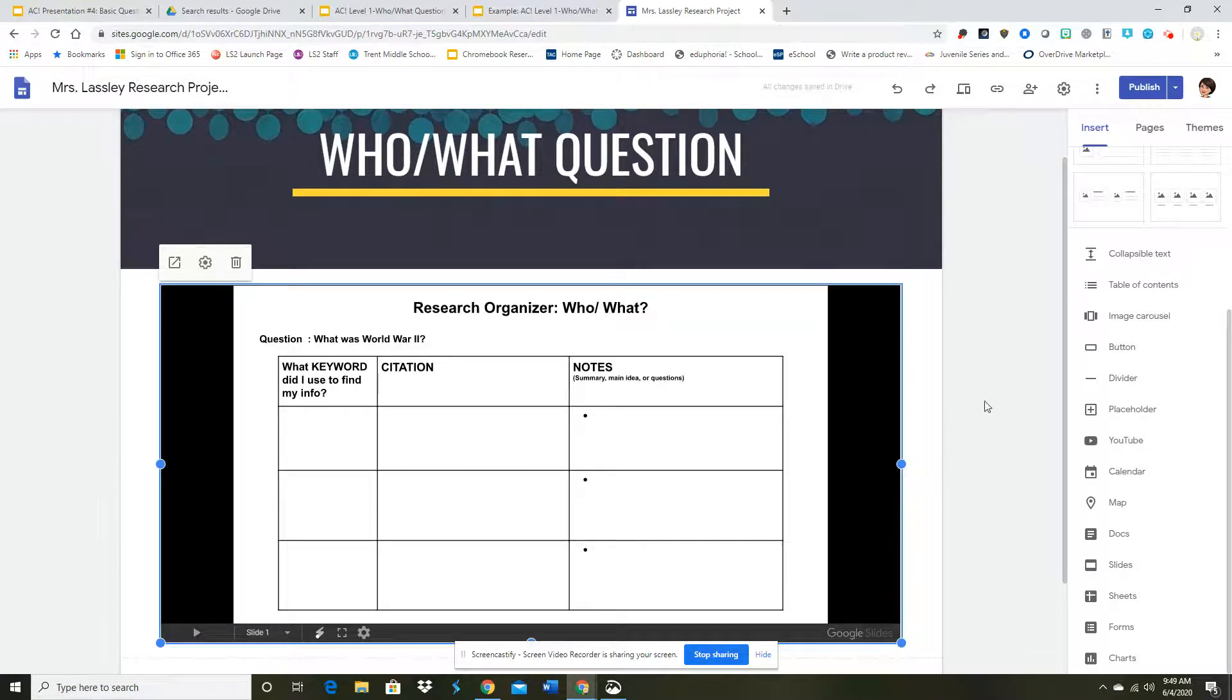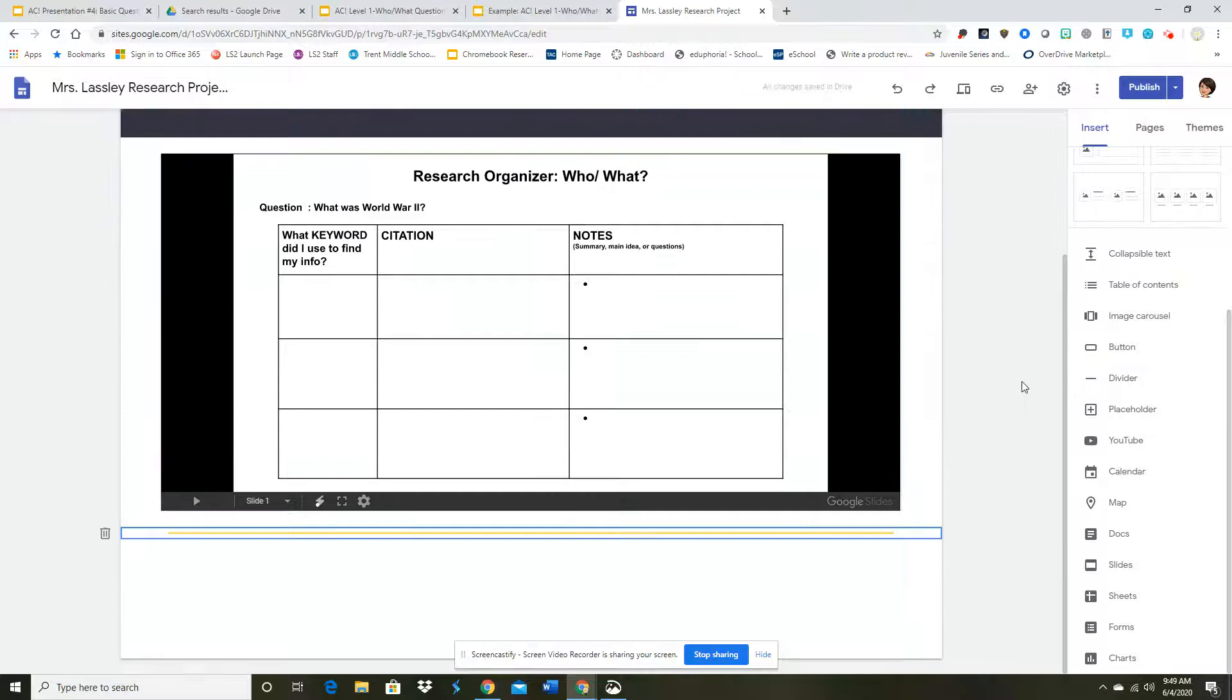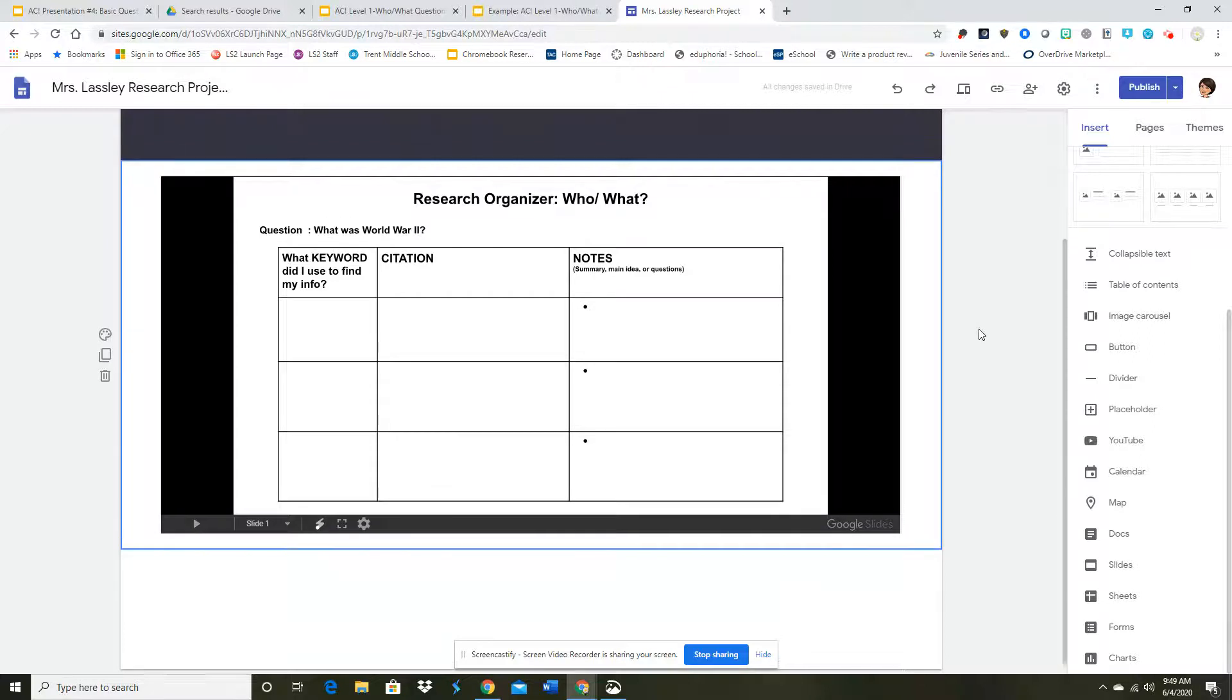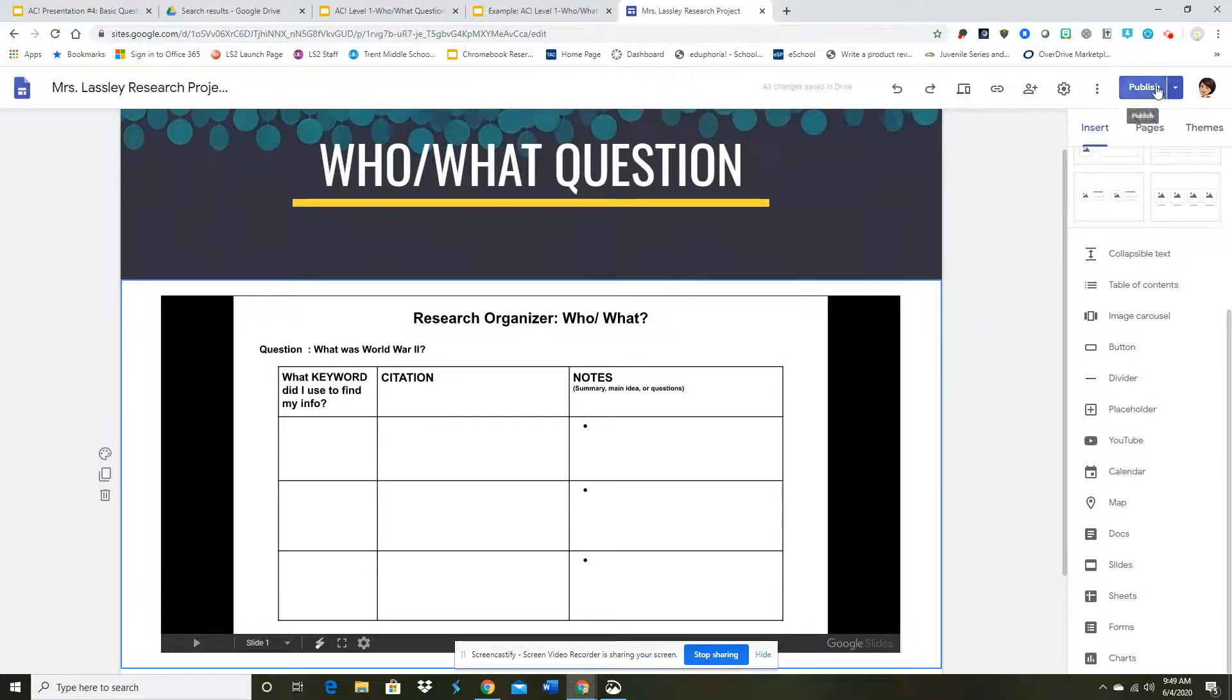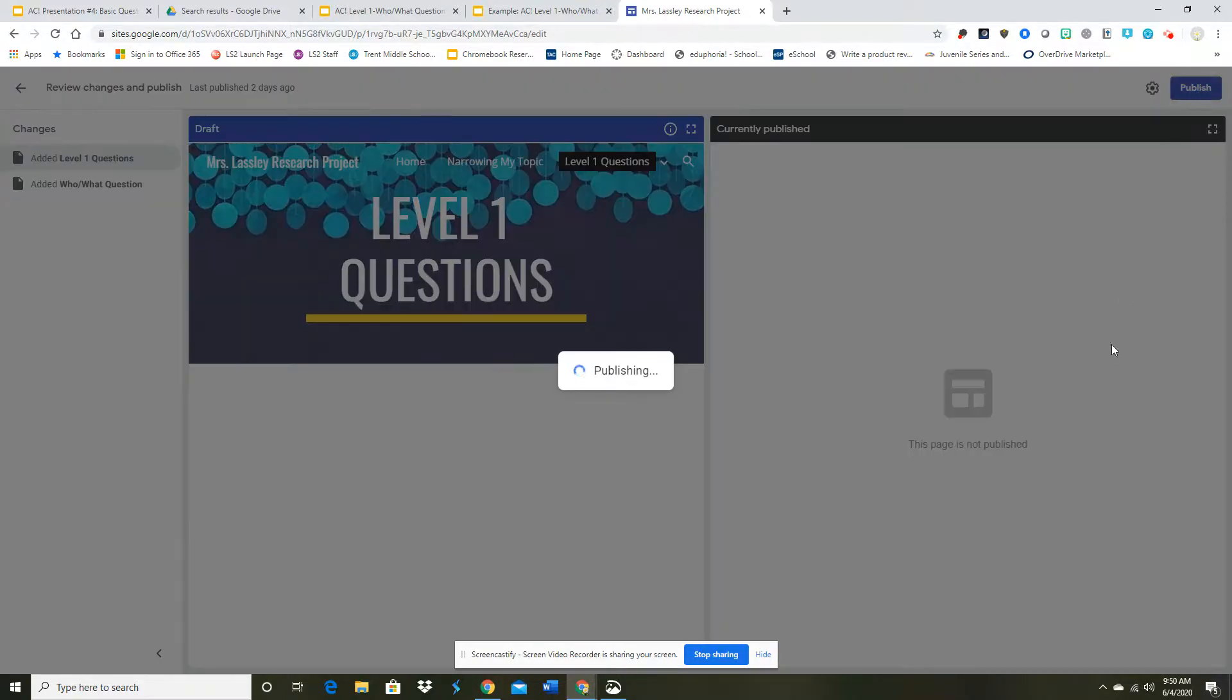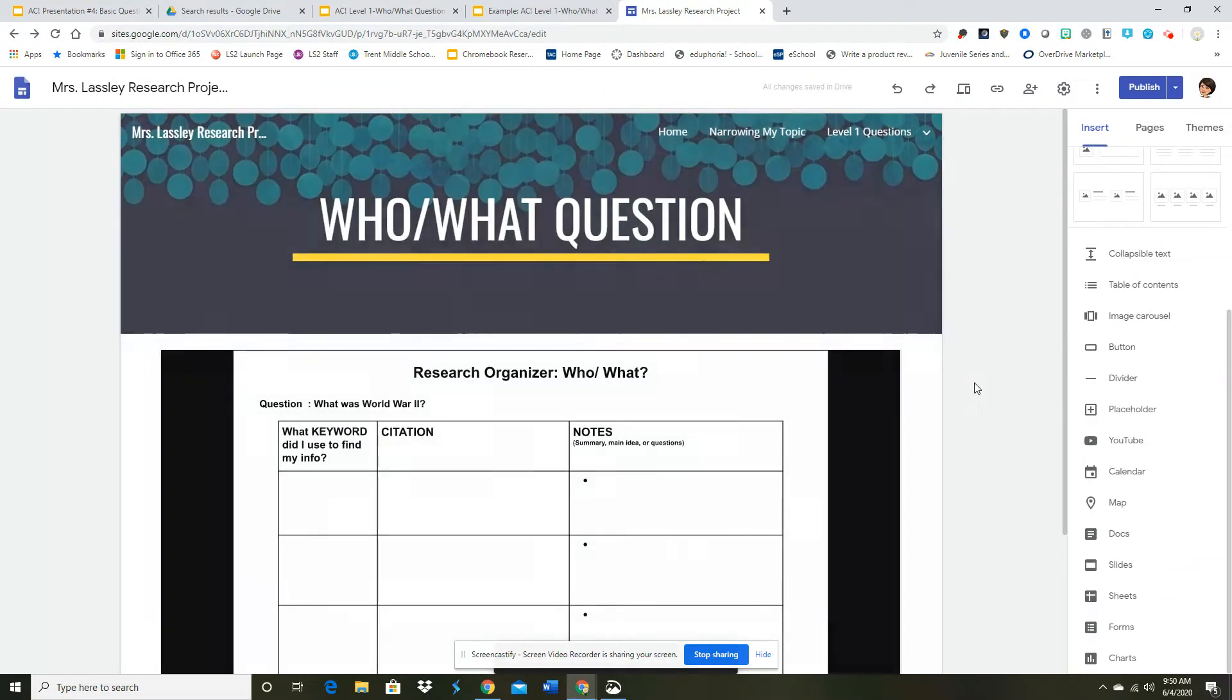How nice is that? And then what I have to do, what do we have to do every single time? I accidentally hit a divider, so I'm going to get rid of that. What I need to do every single time I do this is hit publish. Now it's going to show me a couple of things. First off, you'll notice it was not published before. There was no other page before. So I'm going to go ahead and hit publish. And now my website is up to date.